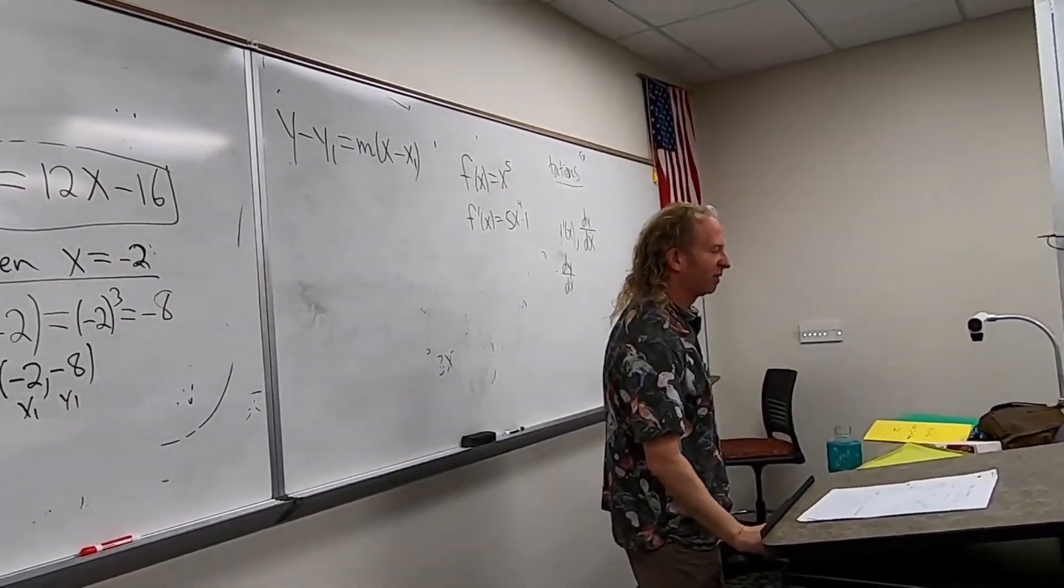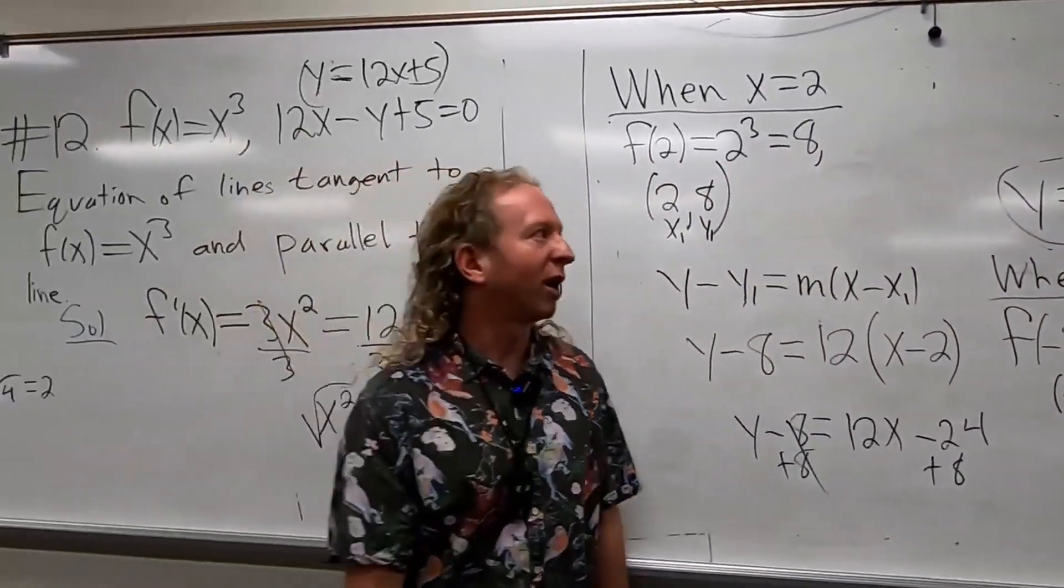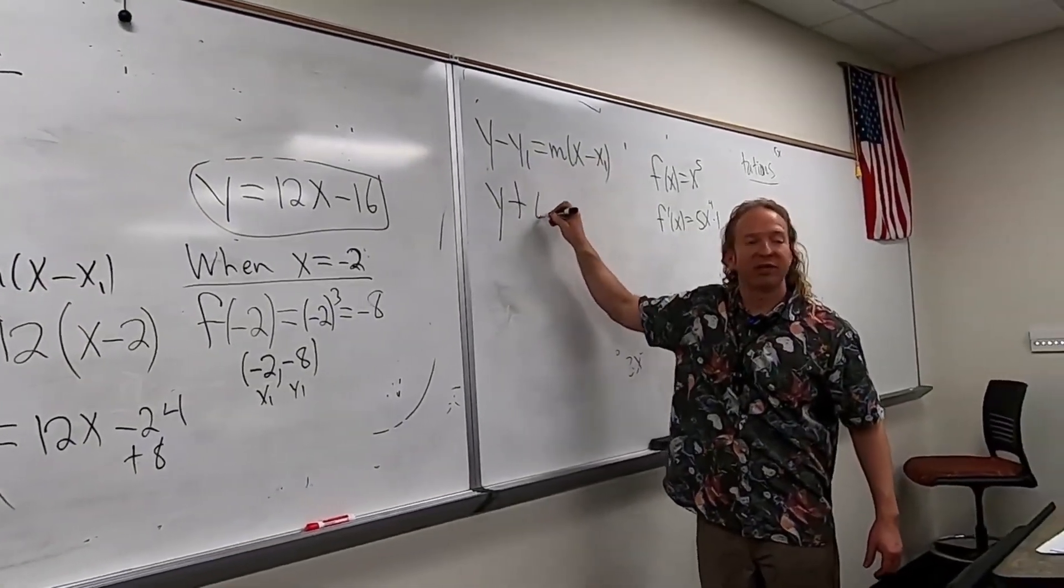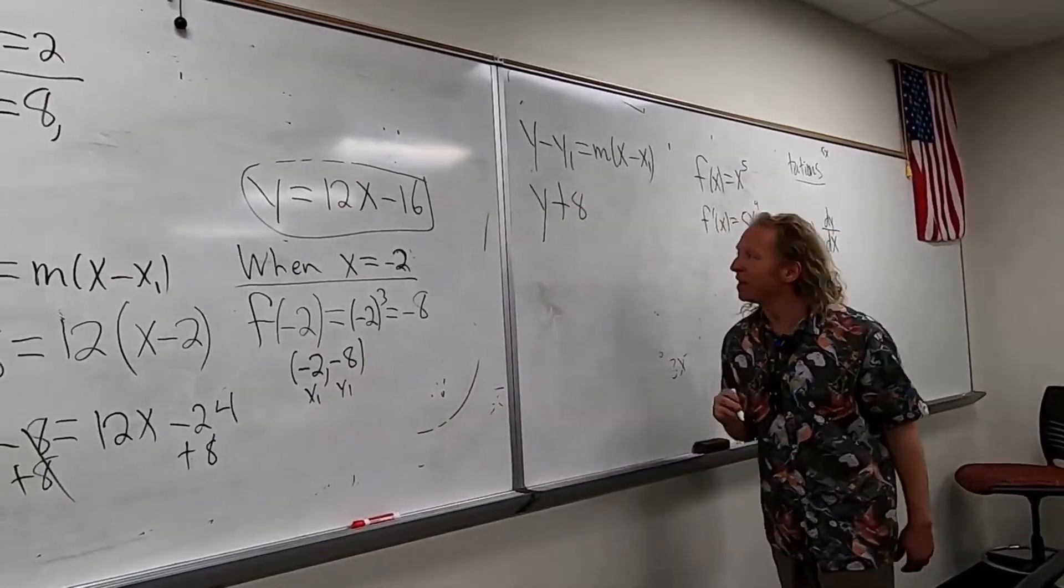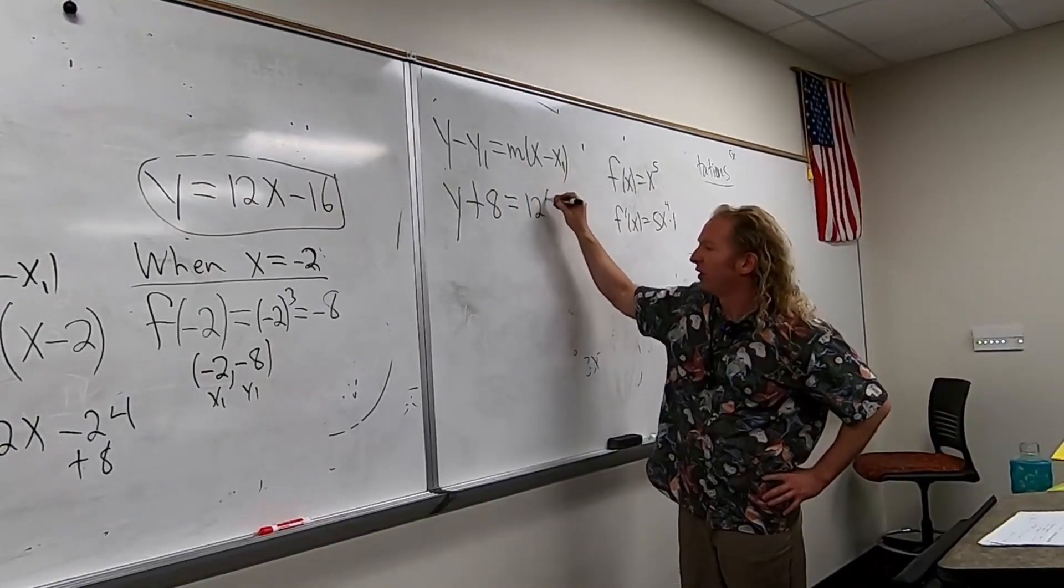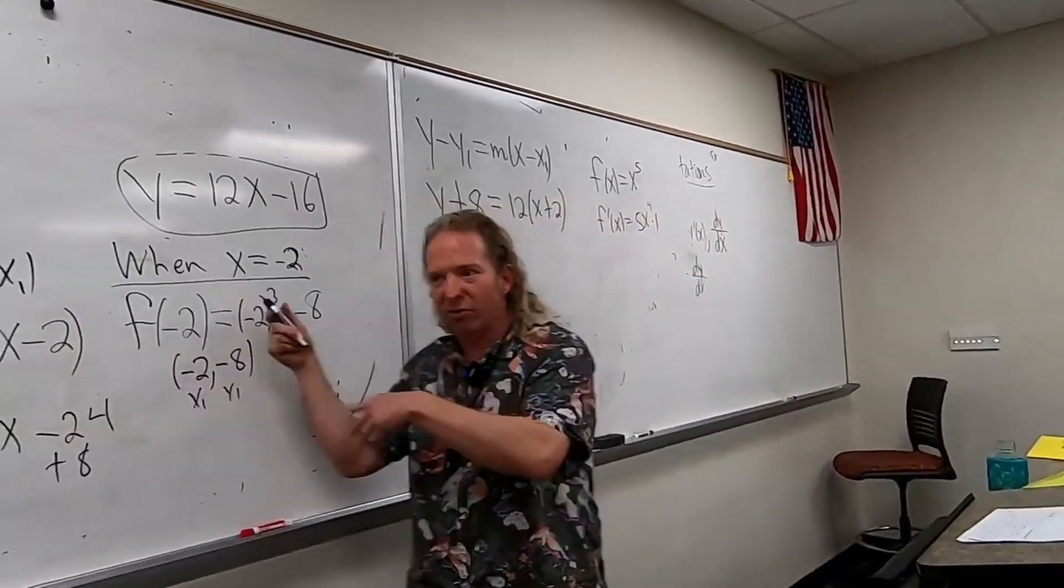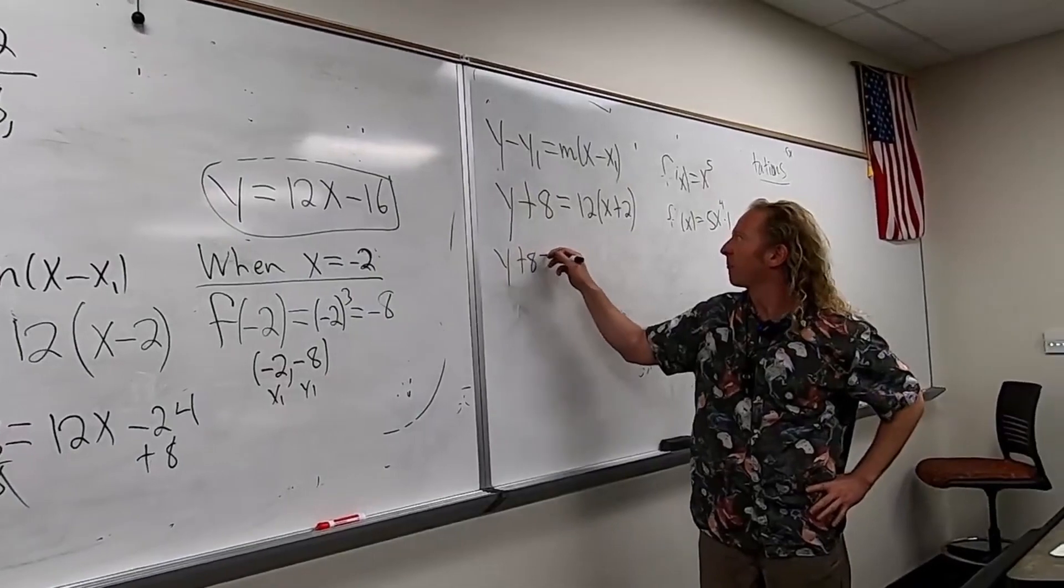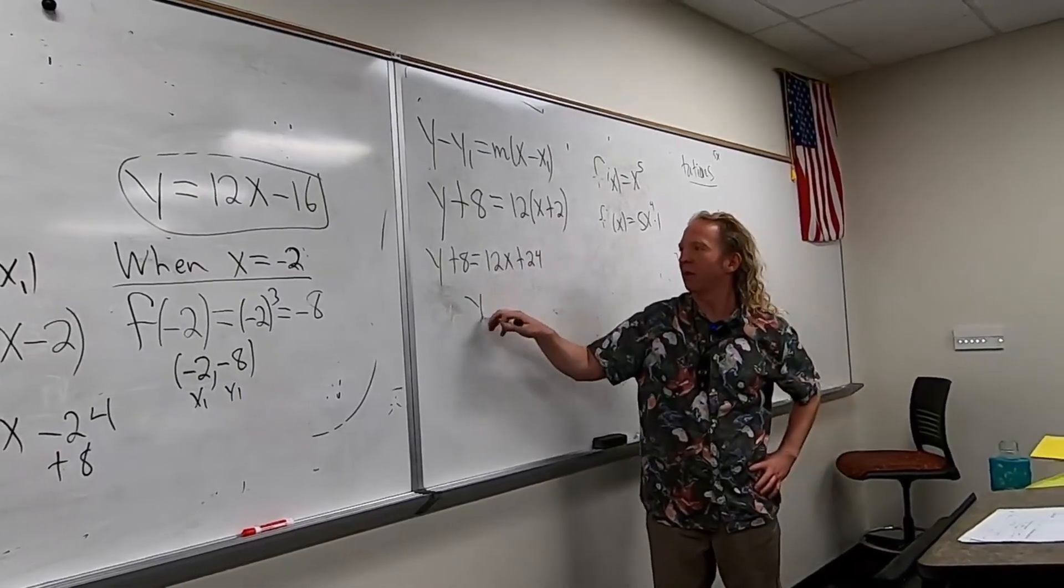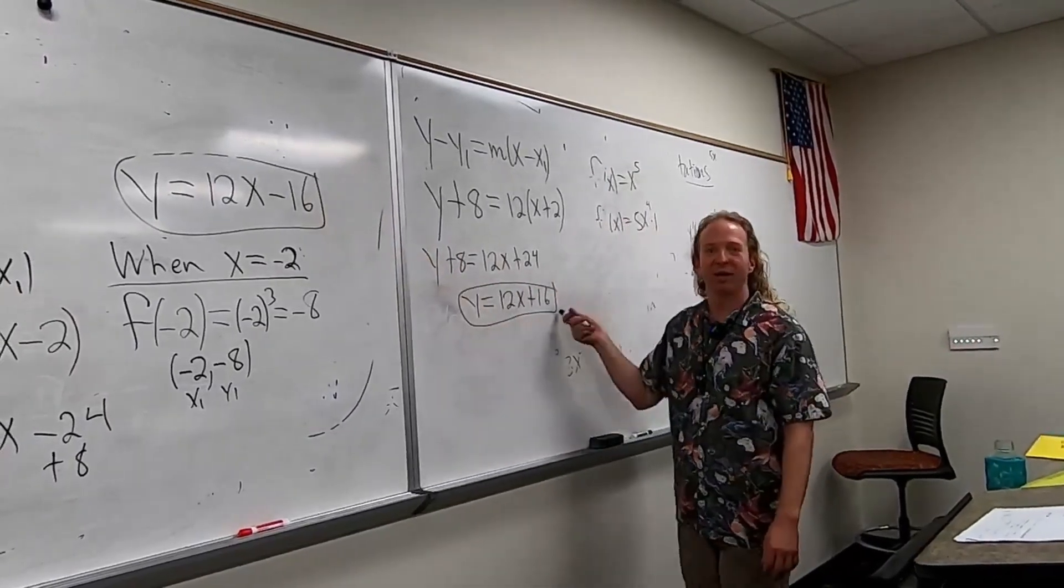Then we use our formula again. So y minus y1 is mx minus x1. Plug everything in. This time it'll be y plus 8. We're going to see why it's plus. Because it's minus and minus. Minus and minus. And then here we have m. m was, what was m? 12. 12. Yeah, 12. And then x. Plus 2. Plus 2. Yeah, plus 2. Distribute to 12. So we get y plus 8. 12x plus 24. Subtract the 8. Oh, that's cool. 12x plus 16. They're almost the same. Right? It's minus 16. And plus 16. Yeah.